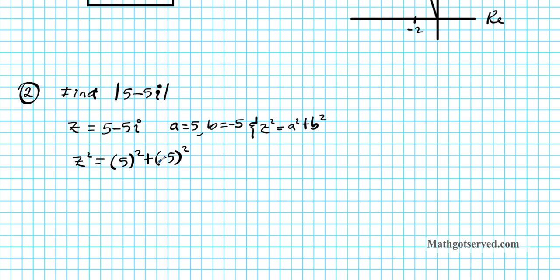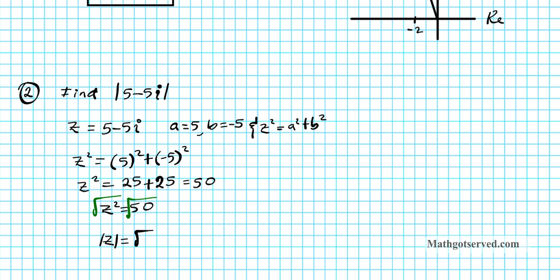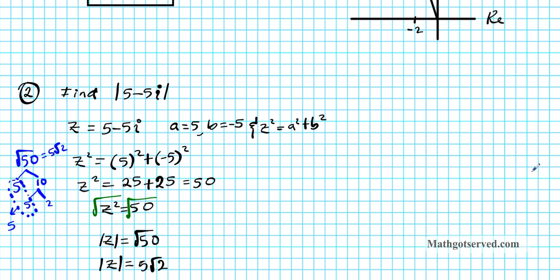Inputting into the formula: z squared equals (5) squared plus (negative 5) squared. When you square a negative it becomes positive, so we get 25 plus 25, which equals 50. So z squared equals 50. Taking the square root of both sides, the absolute value of z equals root 50. Simplifying: 50 factors as 5 times 5 times 2; the two 5's come out as 5, and the 2 stays inside. So root 50 equals 5 root 2. The absolute value of z equals 5 root 2.